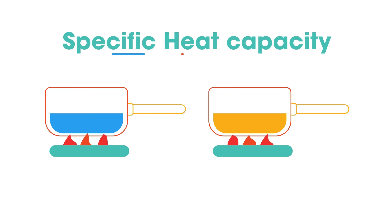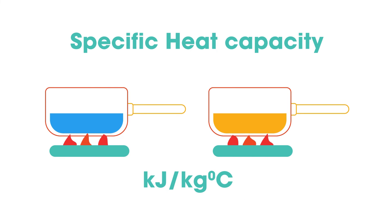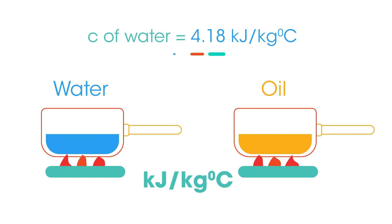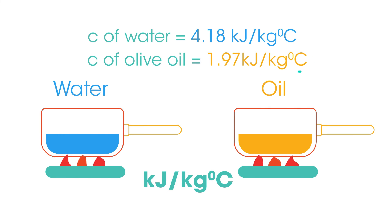Different materials have their own specific heat capacity, and this has consequences in everyday life that we may not be aware of. Most of us cook with water more often than with oil. Imagine heating pans of water and oil over identical heat sources. The specific heat capacity of water is 4.18 kJ/kg/°C and of olive oil is 1.97 kJ/kg/°C.